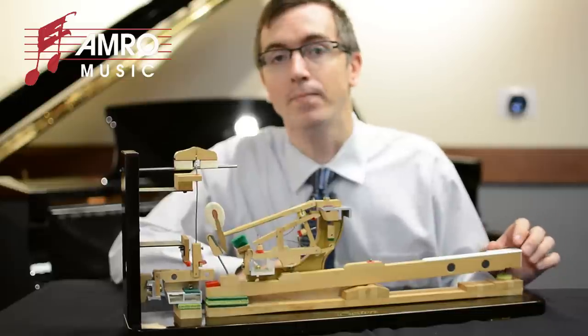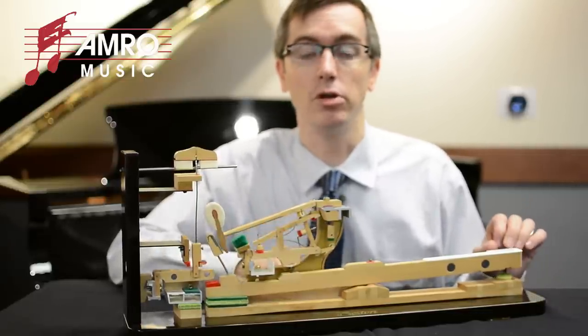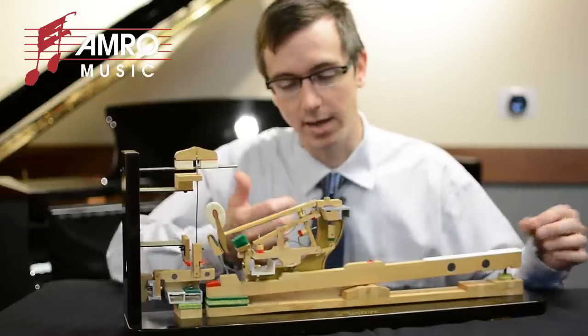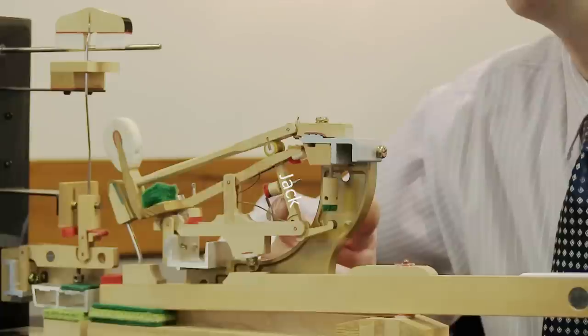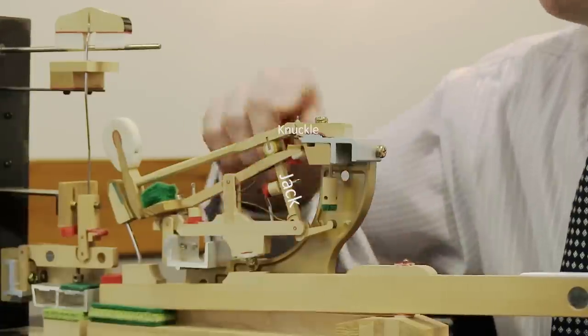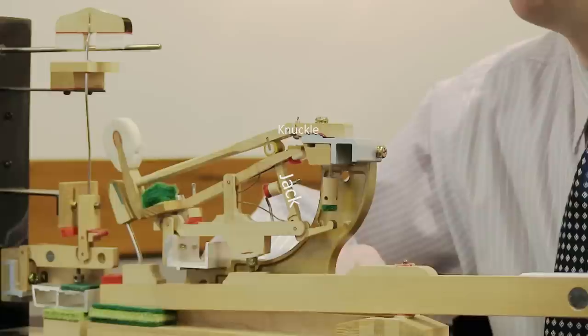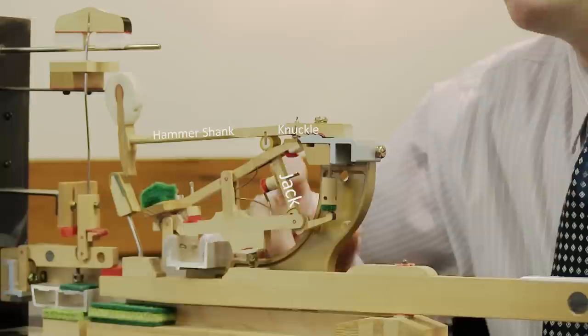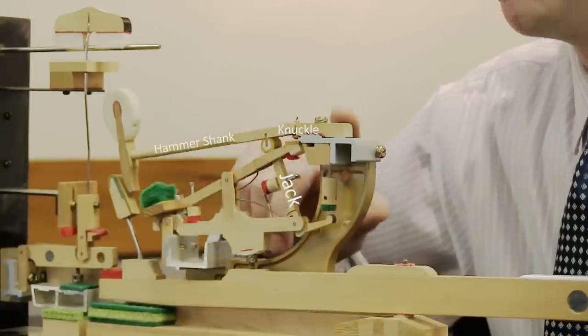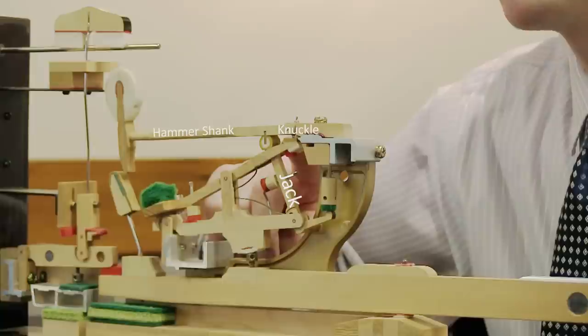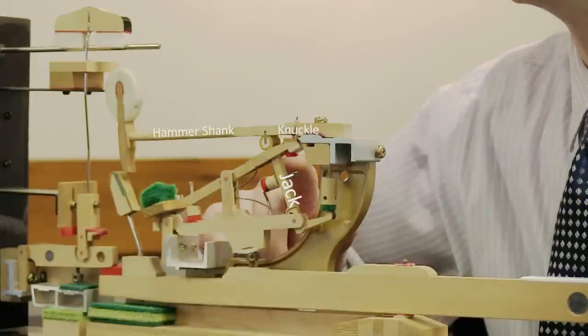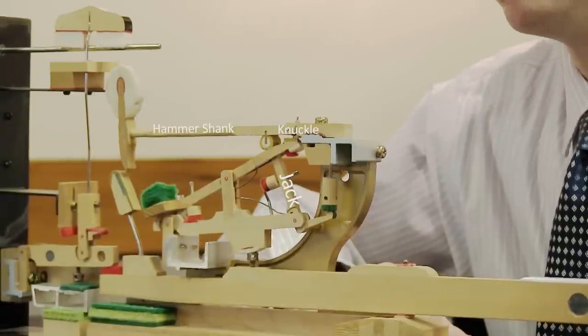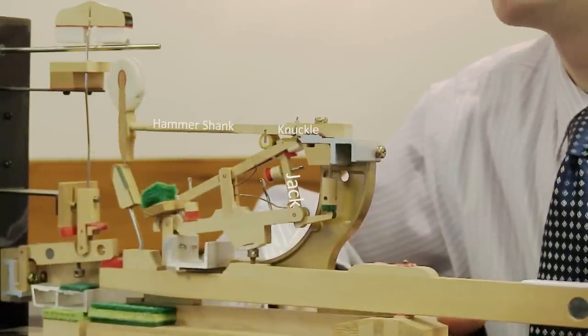Now, the escapement action is what gives us that click feel that you're accustomed to on an acoustic piano and on high quality digital pianos. And that click feel comes from the jack here sliding off of this rounded piece of felt and leather. That's called the knuckle because it's shaped just like a knuckle in your finger. As we raise, we're raising the shank, we're raising the hammer. But at some point about two thirds of the way up, you're going to see the jack slip off behind the knuckle. And that's the click that we're accustomed to feeling.